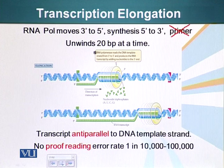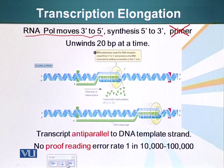Remember we have talked about 3 prime hydroxyl. RNA polymerase moves in the 3 prime to 5 prime direction along the template, but the synthesis of RNA itself occurs in the 5 prime to 3 prime direction.